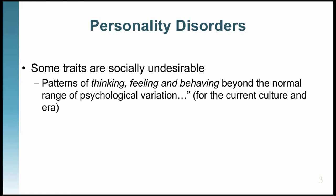We have to be careful here because the normal range of psychological variation depends on multiple things. First, it's dependent on culture — behaviors considered normal in our culture may be seen as aberrant in others, and vice versa. We also need to think about temporal context: behaviors we might consider personality disorder-related today would not have been considered abnormal 50 or 75 years ago. For example, my great-grandmother never got a driver's license — that was considered appropriate for women at the time.